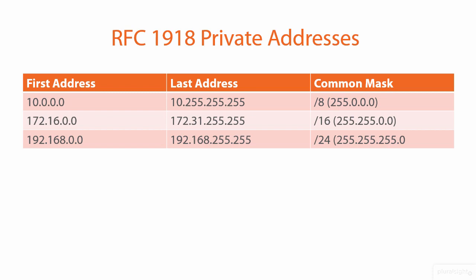I told you that the 32-bit public IP address space has been exhausted, so what do we do? For instance, at home, if you do an IP config or an ifconfig to look at your home computer's IP address, chances are it's an address that starts with 192.168.